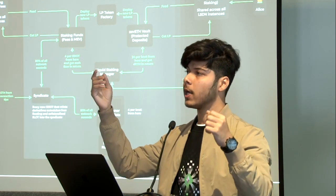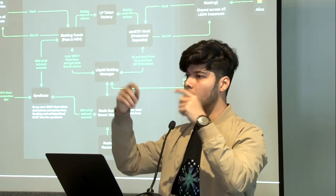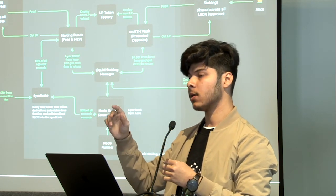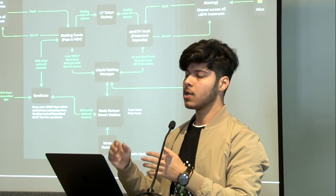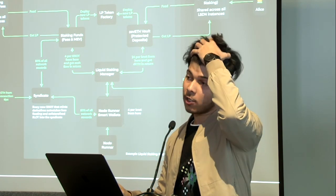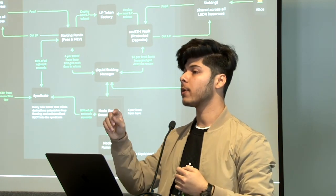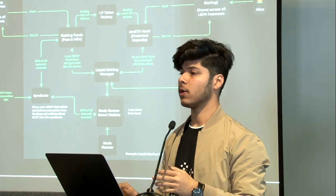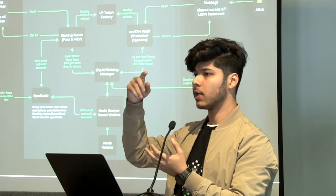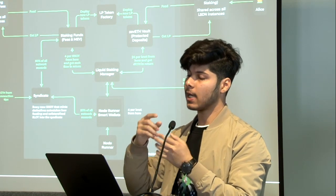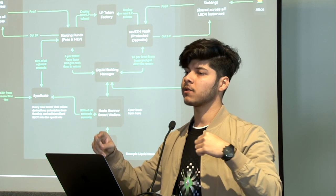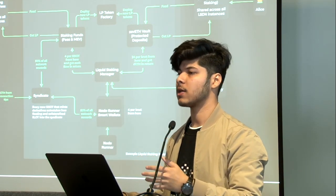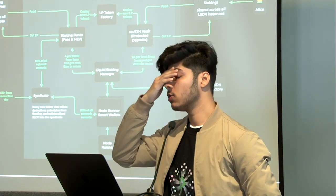The liquid staking manager combines and fetches all those ETH from all the required places when it is ready to be staked. So 32 ETH comes in. Every node operator that comes to an LSD will have their own smart wallet. This smart wallet gets all these 32 ETH deposited in it and then sends them to the Stake House protocol and the Ethereum deposit contract. All is done in a single transaction.